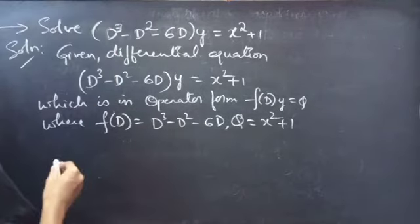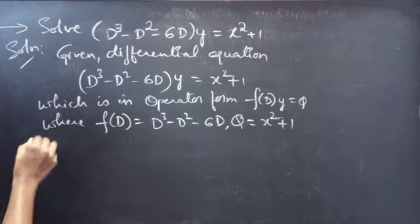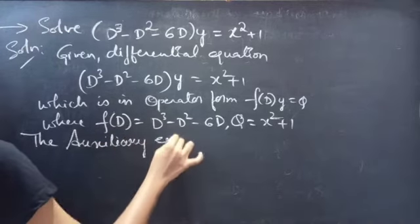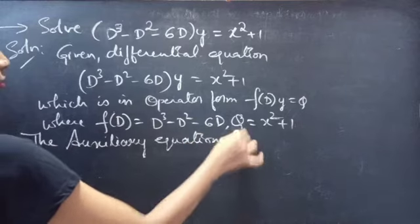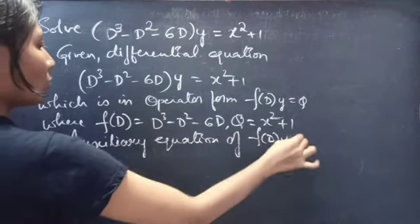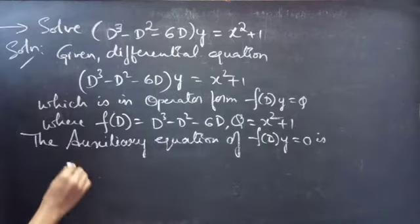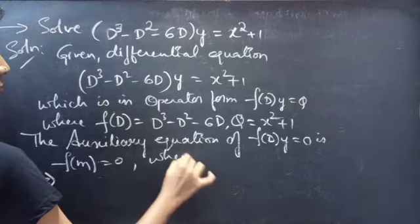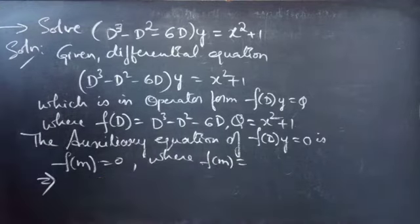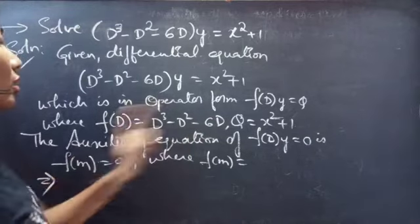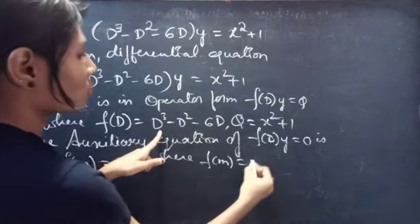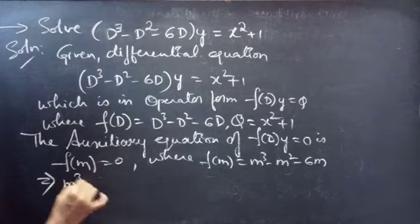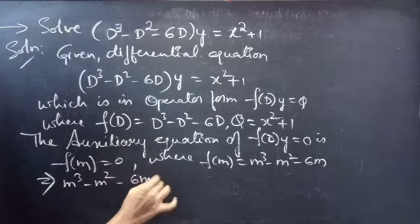Firstly, let's find the complementary function using the auxiliary equation. The auxiliary equation of f(D)·y = 0 is f(m) = 0, where f(m) corresponds to our f(D) = D³ - D² - 6D. Now let's replace the differential operator by m, so we get f(m) = m³ - m² - 6m. Then our auxiliary equation becomes m³ - m² - 6m = 0.